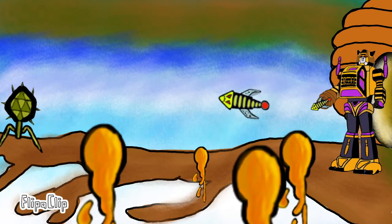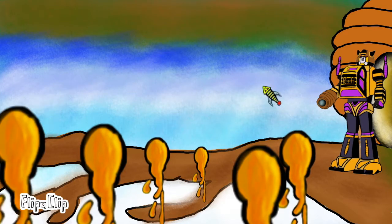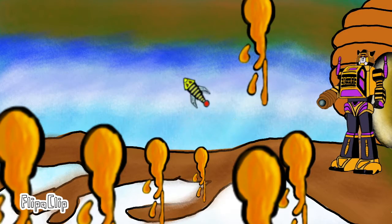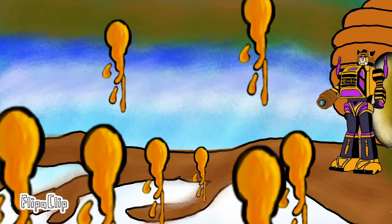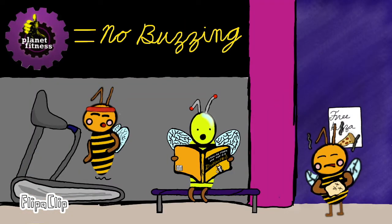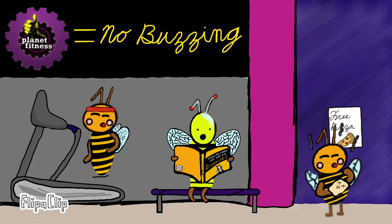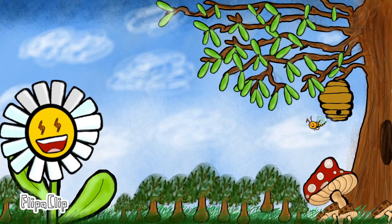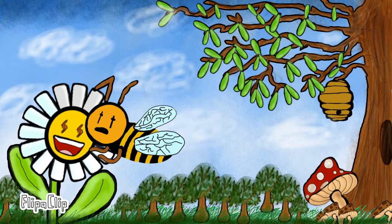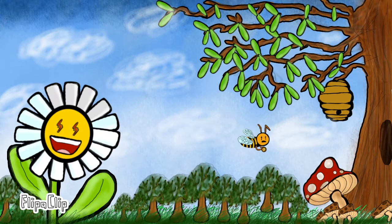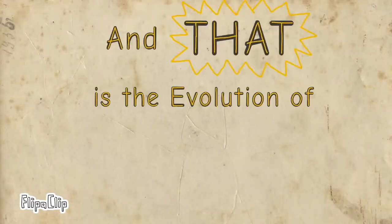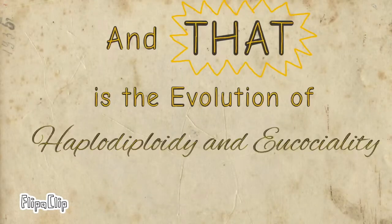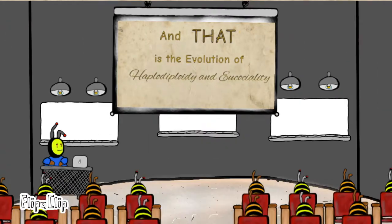This allows the dominant class — the worker bee — to maintain its genes in subsequent generations without reproducing herself. This efficient use of resources enables worker bees to maintain the colony and increase fitness. The end result is efficient beehive colonies where resources and gene propagation are maximized, allowing our buzzing friends to fulfill their ecological importance. And that is the evolution of haplodiploidy and eusociality.